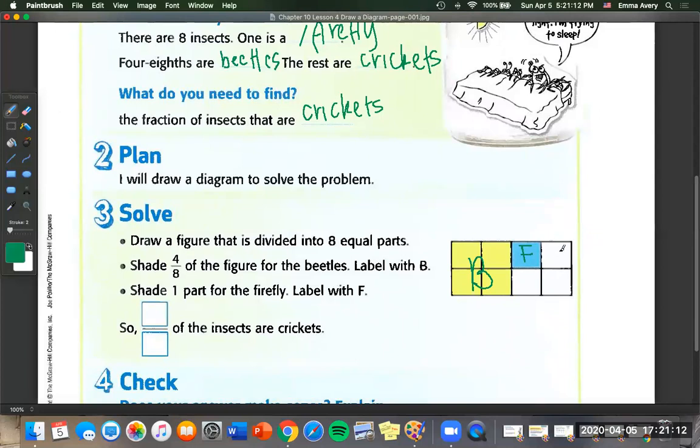Shade one part for the firefly and label it with an F. So what do we have left over? We've got one, two, three, four crickets. And our bottom is going to be the same. The denominator is always going to be that total number. So that's eight. So three eighths of the insects are crickets.